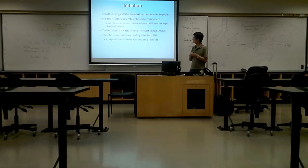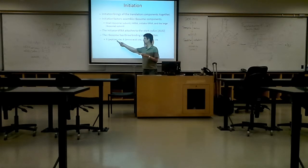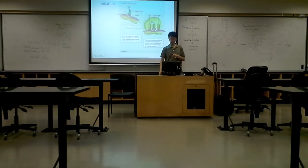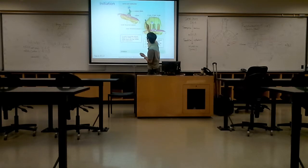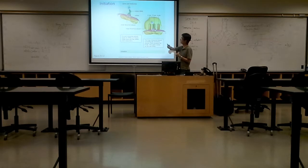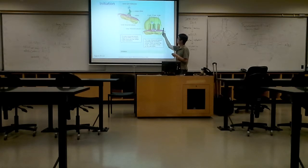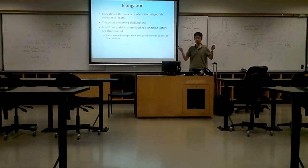The initiator tRNA attaches to the start codon AUG. You have the three binding sites — the P site, A site, and E site. P stands for peptide, A stands for amino acid, and E stands for exit. The initiator tRNA will look for the AUG sequence on the messenger RNA, bind to it, and then the two subunits come together. When the two subunits come together, the initiator tRNA will be at the P site — which is in between the A and E sites.